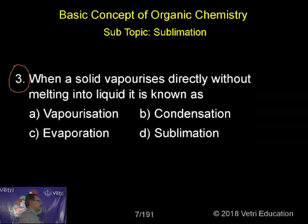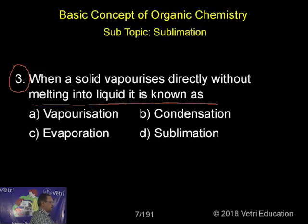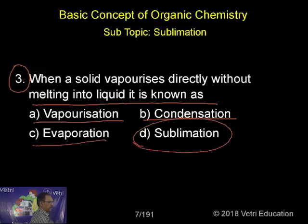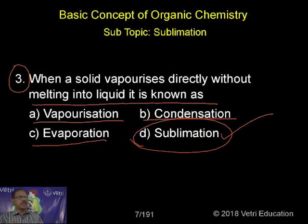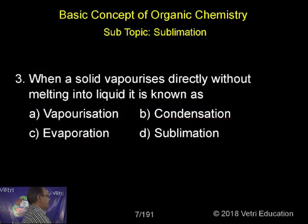When a solid vaporizes directly without melting into liquid, it is known as sublimation. Sublimation is a process by which any volatile solid when heated will be converted into vapor form without converting into liquid, and these vapors on cooling give back the original solid.